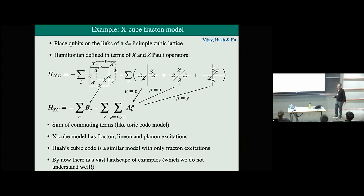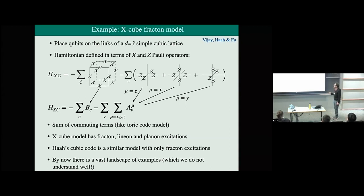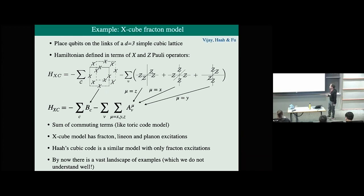This is the x-cube fracton model. It's a model of qubits — spin-1/2 spins — that live on the links of the 3D simple cubic lattice. The Hamiltonian is a sum of commuting terms, which are multi-body interaction terms. This is actually a product of 12 spin operators on the edges of a cube. The Hamiltonian is not simple from the point of view of experimental realizability, but it's very simple theoretically — very similar to the 2D toric code model, the archetypical model for a Z2 spin liquid.